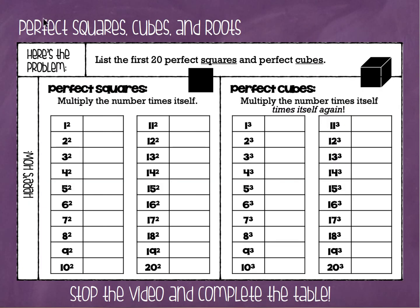Before we start, I'd like to highlight a couple of important things. Perfect squares are when you multiply a number times itself. Perfect cubes are when you multiply the number times itself and then times itself again — you're using that number as a factor three times. When we think about a square, whatever the length is on one side, we've got that same length on the other side because the side lengths are all equal.